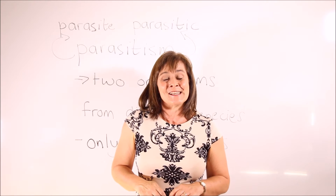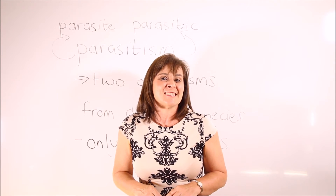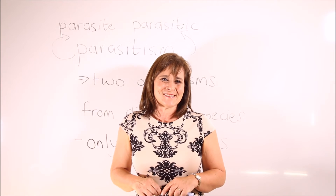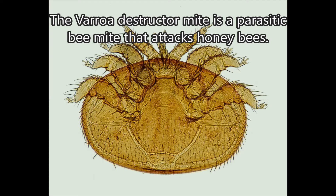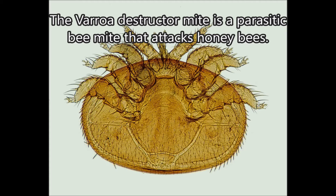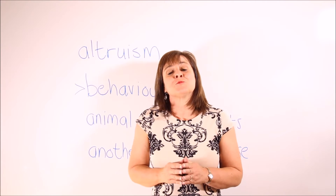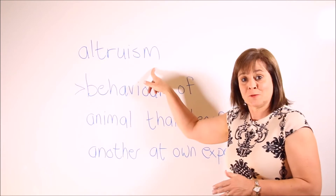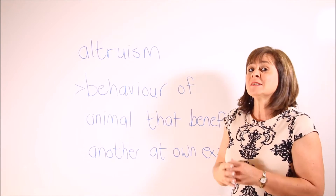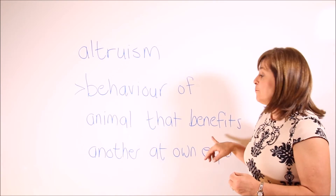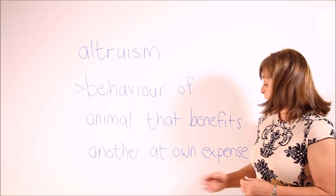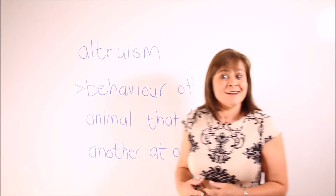Here's the sample sentence: the varroa destructor mite is a parasitic bee mite that attacks honeybees; the parasites can destroy entire bee colonies. Our next biological relationship is altruism.